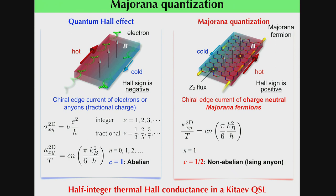In Kitaev magnets, edge currents are carried by charge-neutral Majorana fermions. Because of this charge neutrality, only thermal Hall conductance can be quantized. Remarkably, this thermal Hall conductance is quantized as a half-integer multiple of the unit. This is because the degree of freedom of Majorana fermions is half of that of conventional fermions. Moreover, this half-integer quantization provides strong evidence for the non-Abelian ground state.